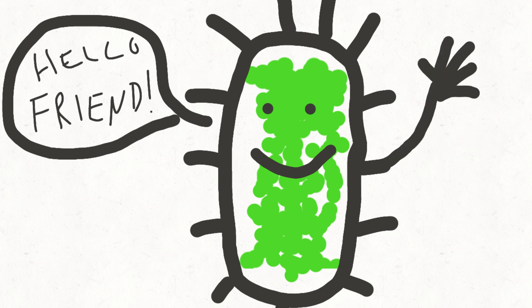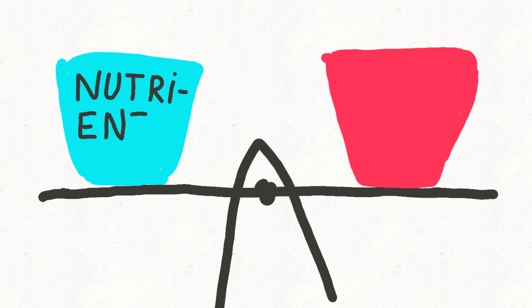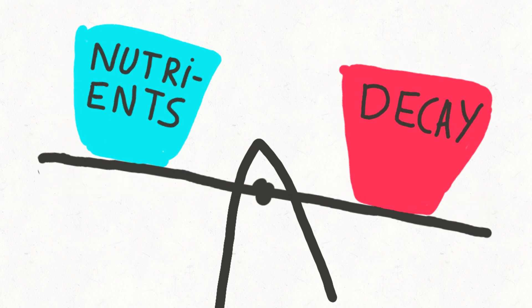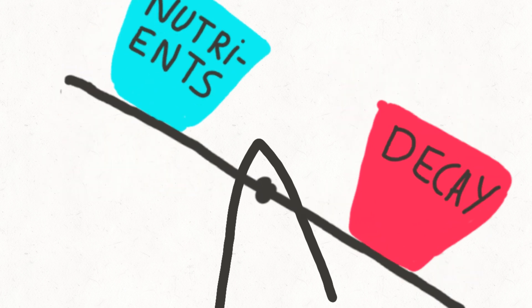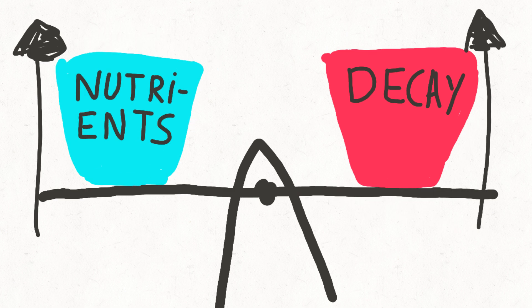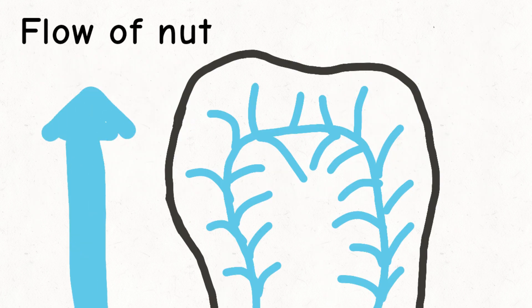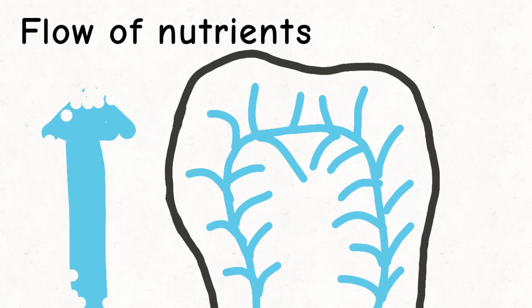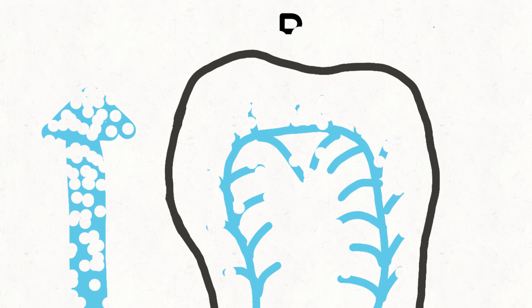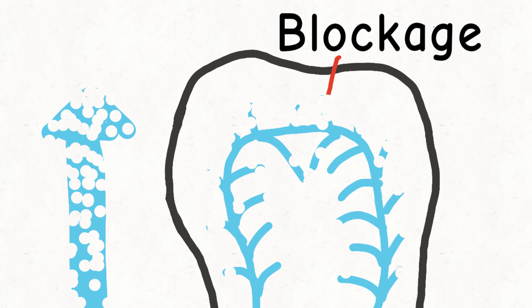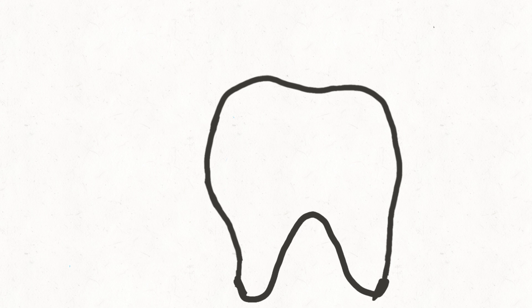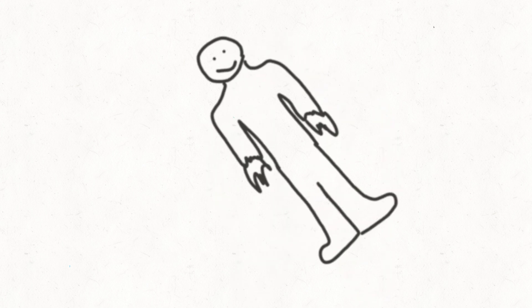So the actual problem is that there's more breakdown than build up. Why is there more breakdown than build up? Because the flow of nutrients into the tooth is not as strong as it should be. This means there is a blockage somewhere in the system. And to actually understand what is going on, we have to look at not just the tooth, but the whole human, all of you.